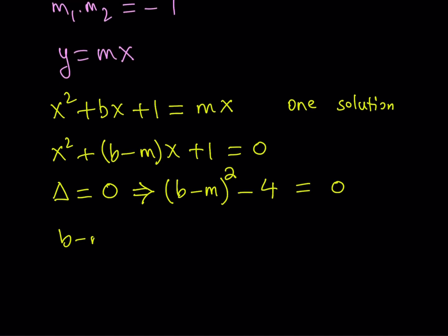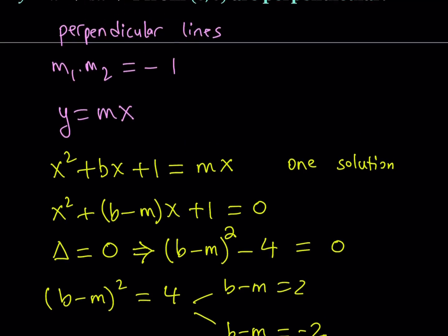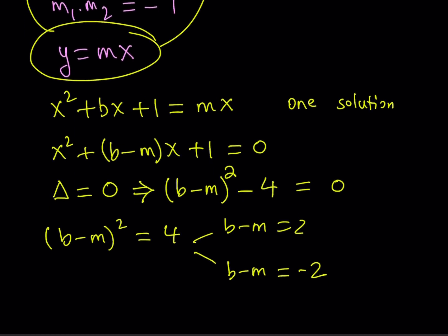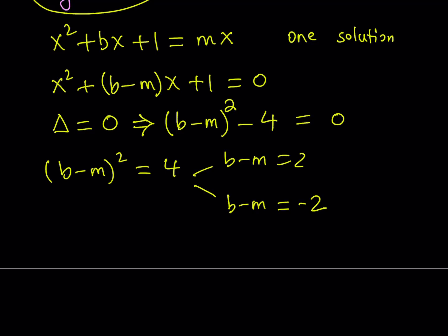Now this gives us two solutions because b minus m squared equals 4 implies that either b minus m is equal to 2 or b minus m is equal to negative 2. So this gives us two values. But remember, I had told you at the beginning that even though I'm writing one line, one equation, y equals mx, that actually represents two lines. This one and that one. And what is the difference? The difference is in the slopes because they both go through the origin.